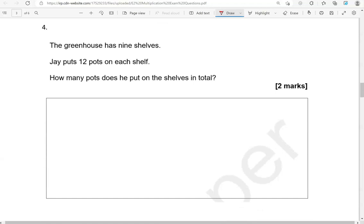The greenhouse has 9 shelves. Jay puts 12 pots on each shelf. How many pots does he put on the shelves in total? So it's 9 times 12 or 12 times 9, whichever you prefer.